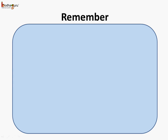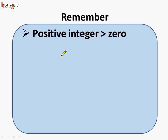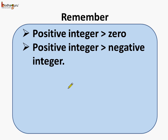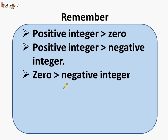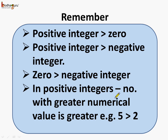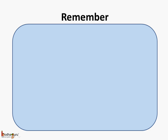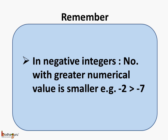So remember, children, when comparing two integers: a positive integer is always greater than 0; a positive integer is always greater than a negative integer; 0 is always greater than a negative integer; and in positive integers, the number with greater numerical value is greater. It is just the opposite in case of negative integers — the number with greater numerical value is smaller.